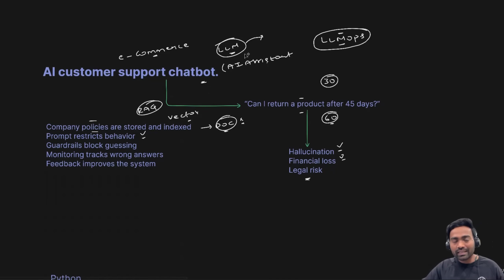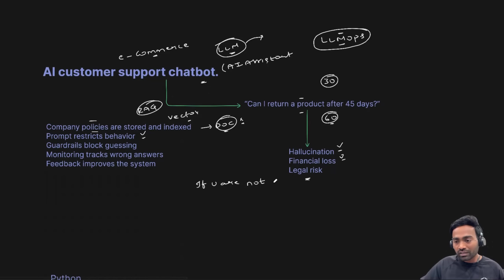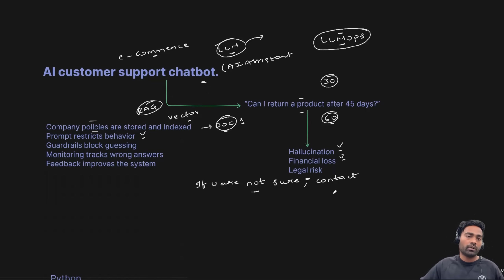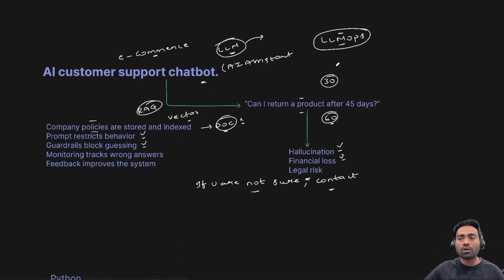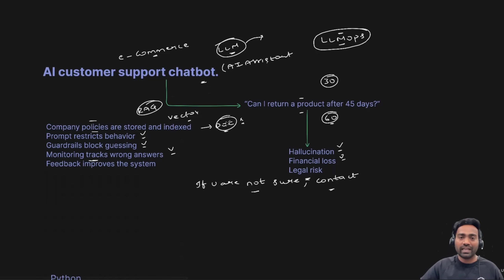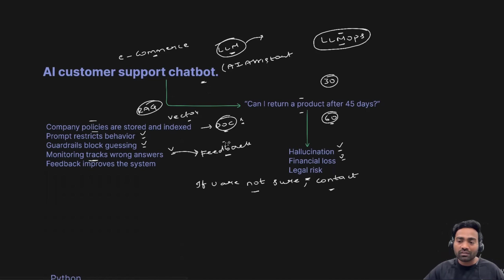Then the LLMOps engineer also restricts the behavior of the large language model. The LLMOps engineer can provide a prompt such as: 'If you are not sure about the answer, just say contact support.' This single prompt can eliminate hallucination. This is part of LLMOps — you can also provide guardrails so it cannot access certain documents or say anything against the company's policies. On top of that, it is very important to constantly monitor the answers of the AI assistant, put them in a feedback loop, and at the end of the day or month, look at the feedback and if required, improve the performance of the large language model.